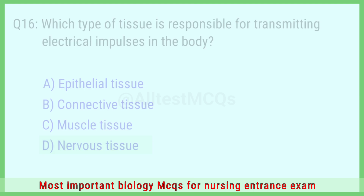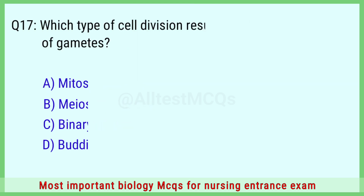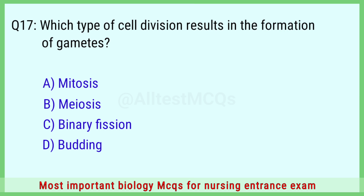Question number 17: Which type of cell division results in the formation of gametes? The right answer is option B: meiosis.